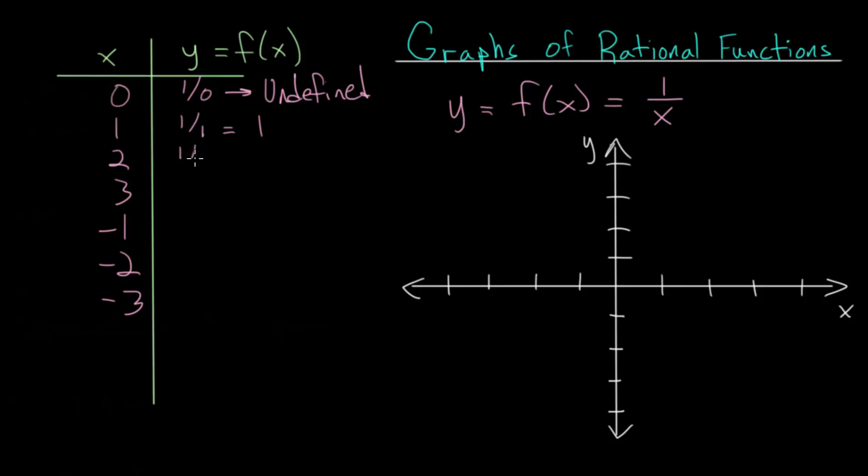If we plug in 2, we get 1 divided by 2, which is 0.5, or a half. When we plug in 3, we get a third, which as a decimal is 0.3 repeating.